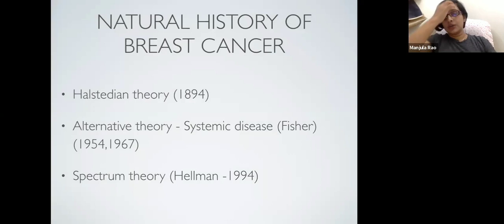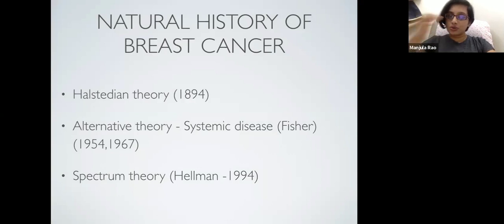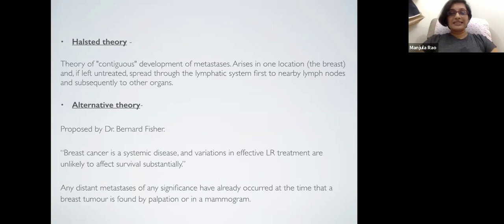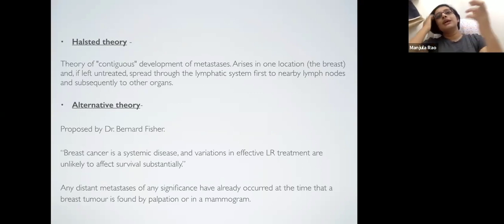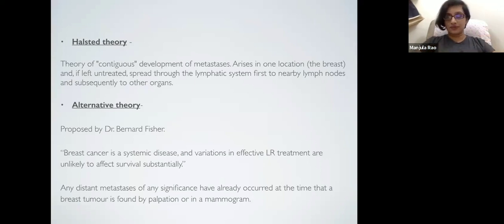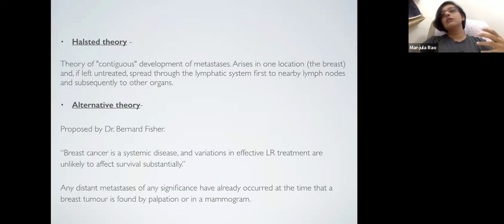Coming to the natural history of breast cancer, there have been various theories put forth to explain the course of the disease since more than a century ago. The first was the Halsteadian theory, coined by William Halstead in 1894. This theory is one of contiguous development - the tumor arises in the breast, spreads by lymphatic spread to the lymph nodes, and then to the rest of the body.